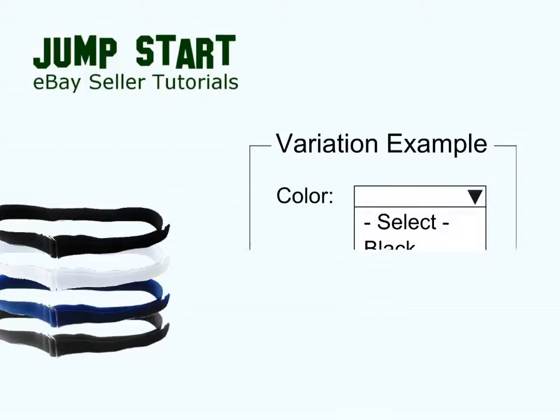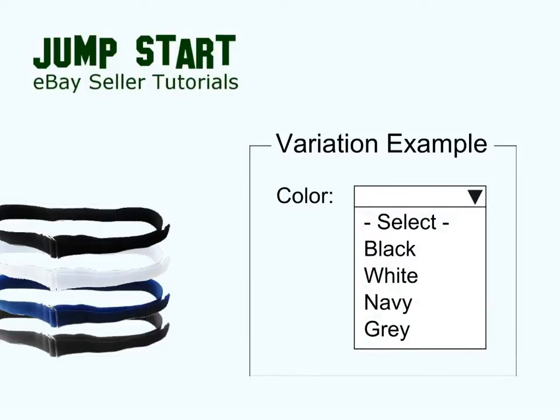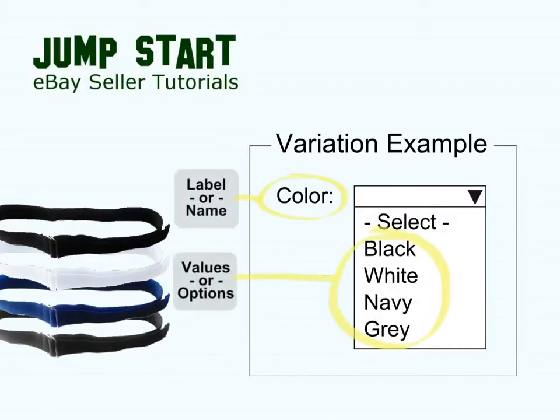when you create variations, you define the label and its values. When buyers view your listing, they see your variations as a drop-down list, which lets them easily select the option they want to buy.